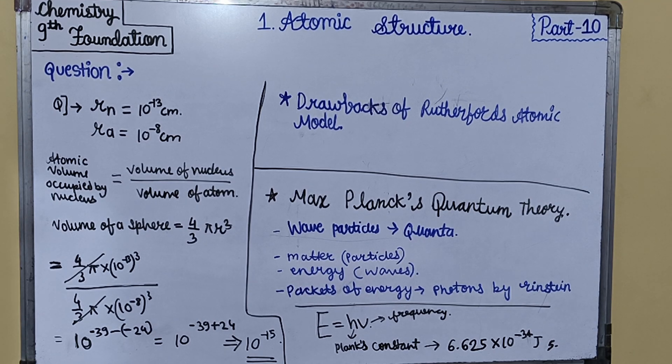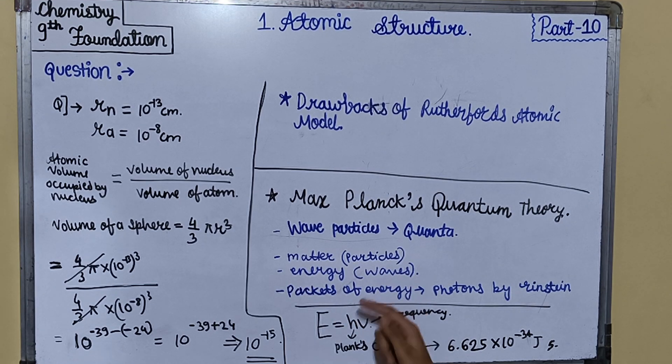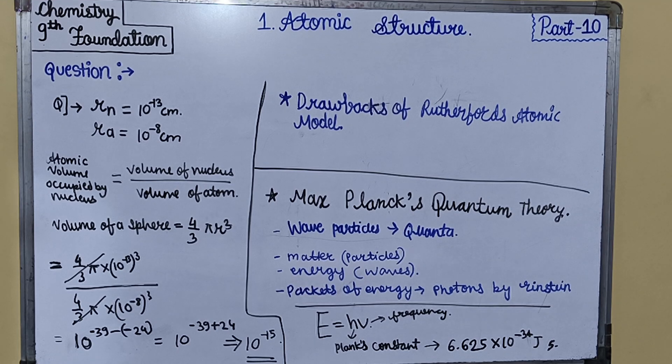Now there is a small question: What is the difference between a quantum and a photon? Answer is that any packet of energy is called quantum. And a packet of energy of light is called photon. These are the differences.